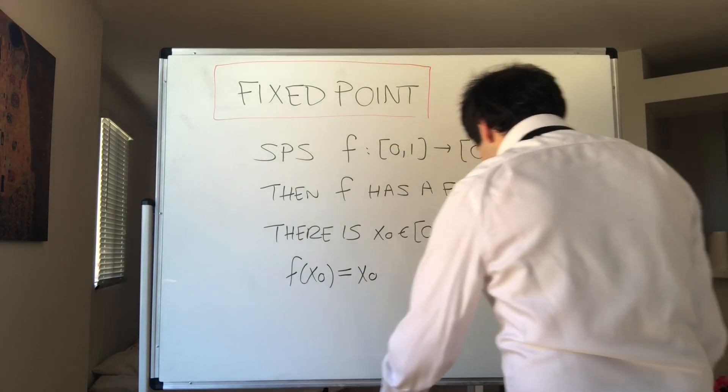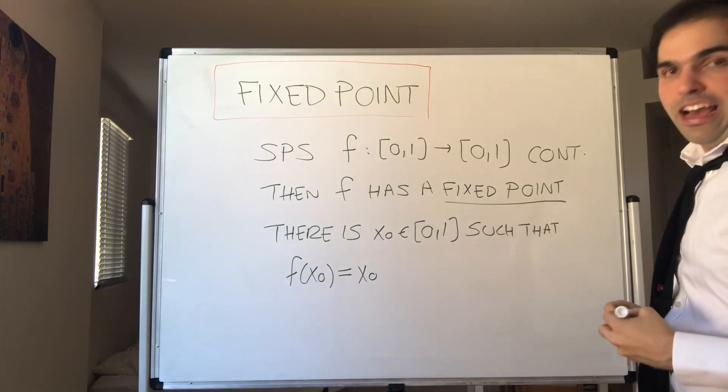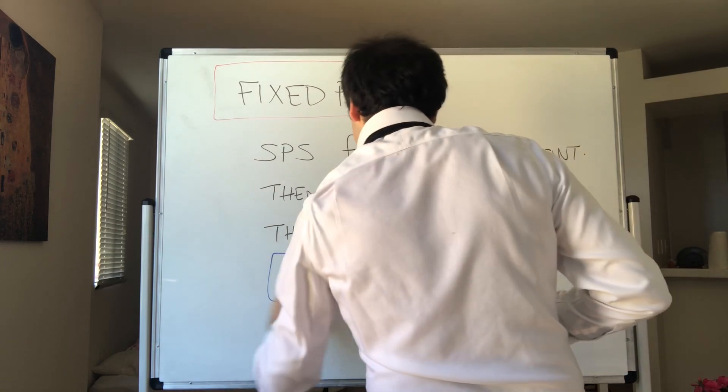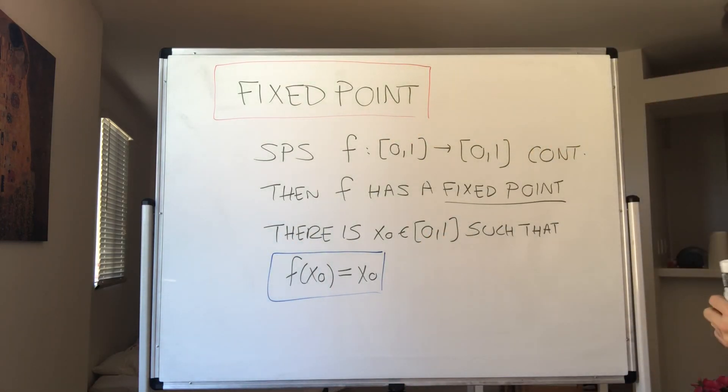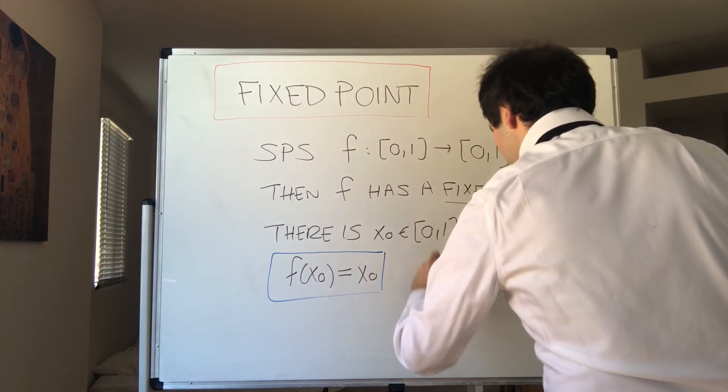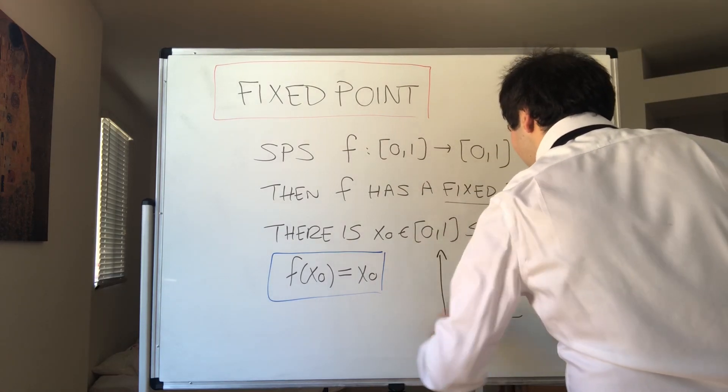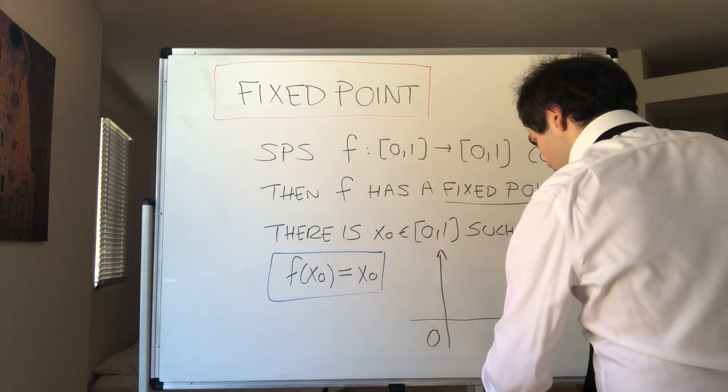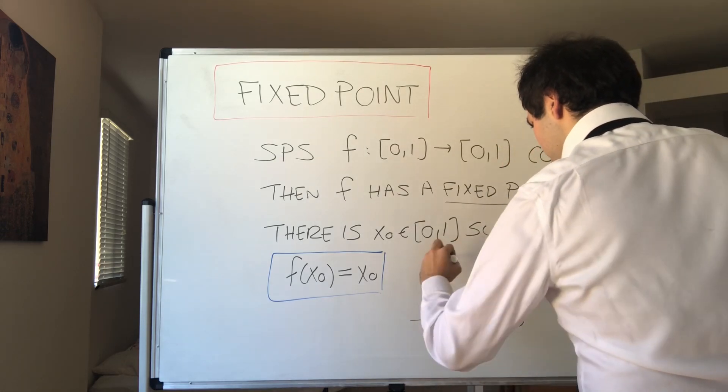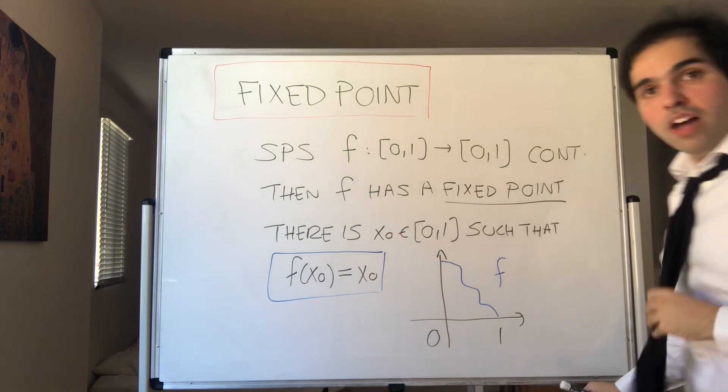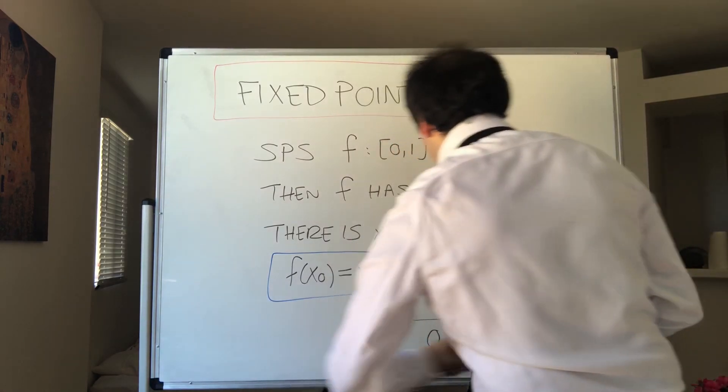In other words, this point is fixed by f, so nothing happens here. And there is actually a nice geometric interpretation of this, because all that this means is that if you have a function like that from [0,1] to [0,1], for instance like this, suppose f looks like this, then f must cross the line y equals x.